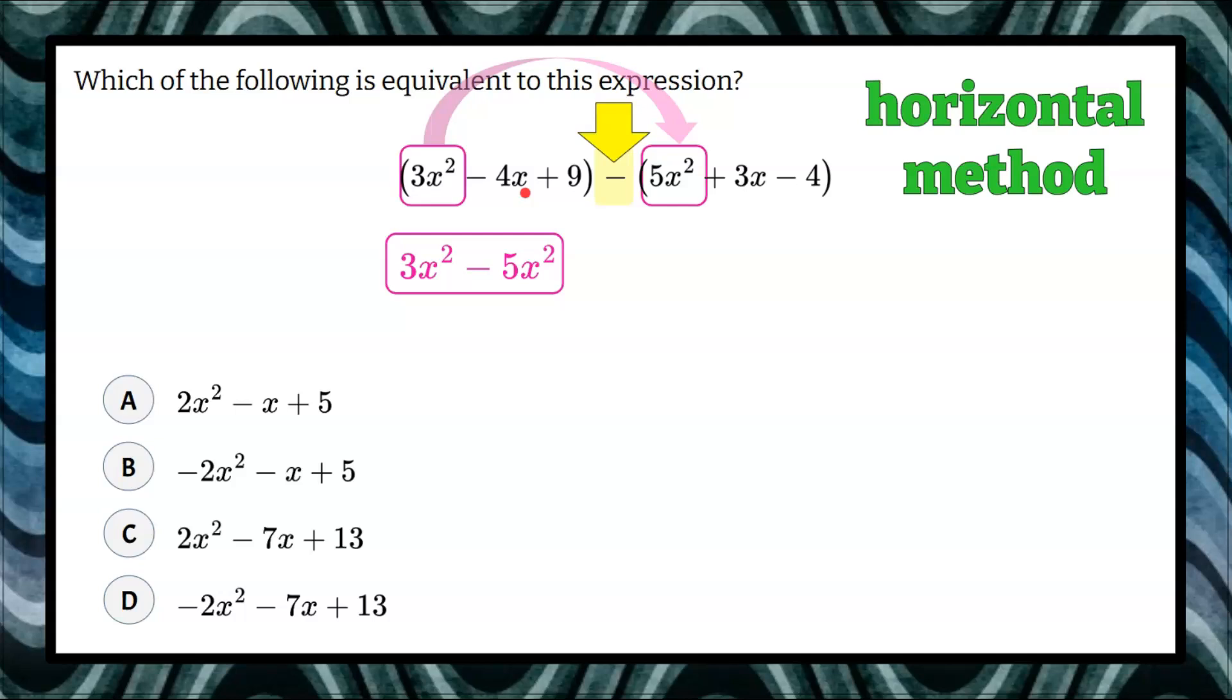Then we're going to go to the next pair of like terms. We have negative 4x subtract positive 3x. So negative 4x subtract 3x. And our constants, we're going to have positive 9 subtract negative 4. 9 subtract negative 4. That's where it gets tricky.